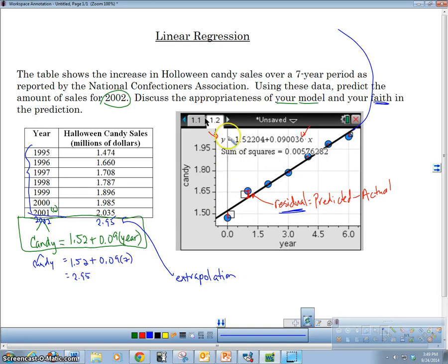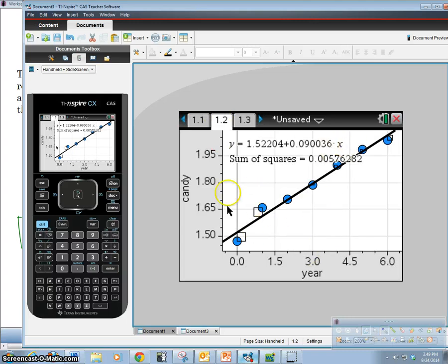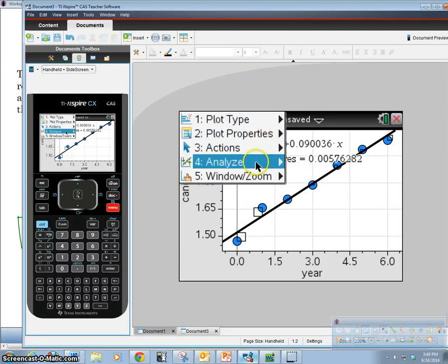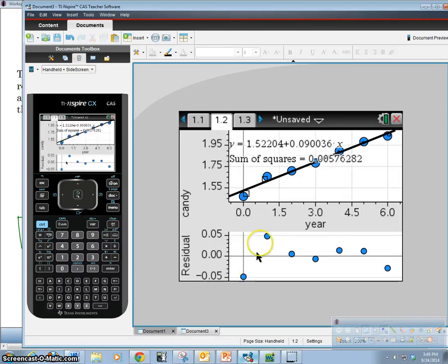Okay. So last thing I want to talk about real quick is what about the appropriateness of my model? Well, you can always tell how appropriate your model is by how your residuals look. And what we would want to do is we want to graph the residuals, these residual plots here. And we want to see if that residual plot gives us a pattern. If it gives us a pattern, then this is not an appropriate model, because our data are probably not linear. Okay. So let's take a look at our residuals. So to find our residuals, in our graph here, we're going to hit menu, analyze, and then residuals. And it says show residual plot. So we're going to show the residual plot and it pops down right underneath.